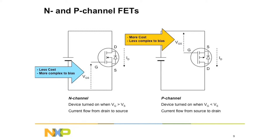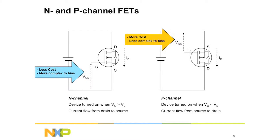An N-channel is the cheapest to manufacture. A P-channel is more exotic and a little bit more difficult to manufacture. So what you'll find is that the vast majority of FETs in the market today are N-channel — less expensive, a little more difficult to use, but that's where the market sits.